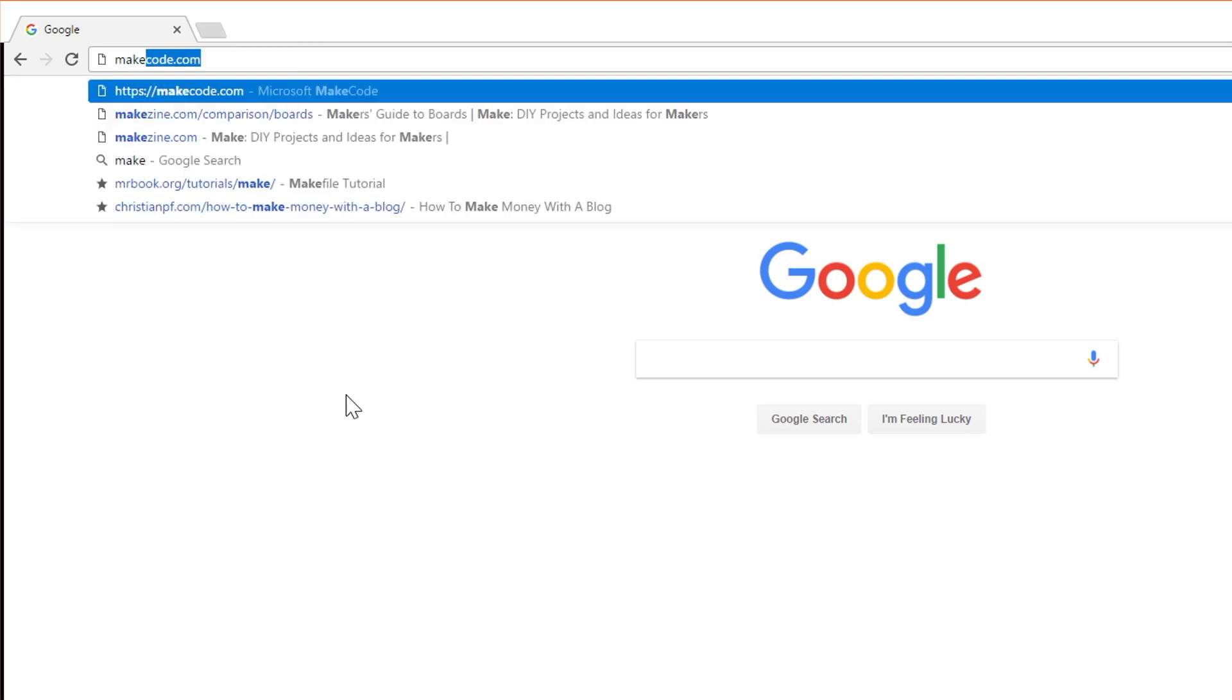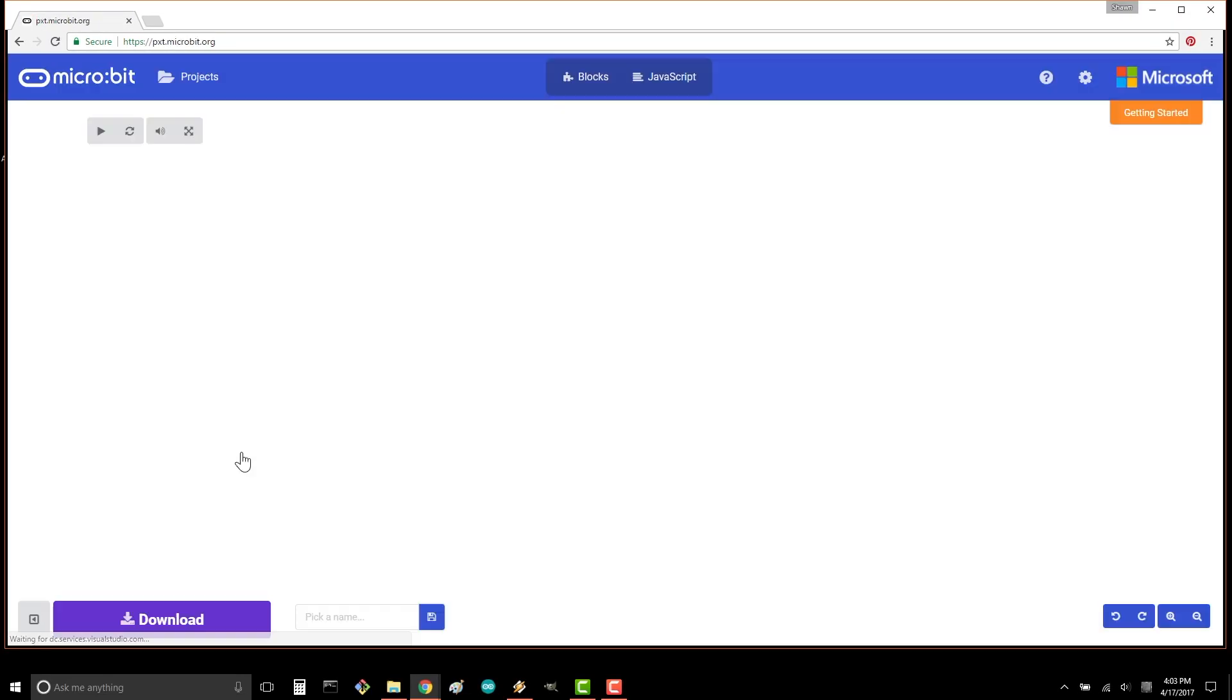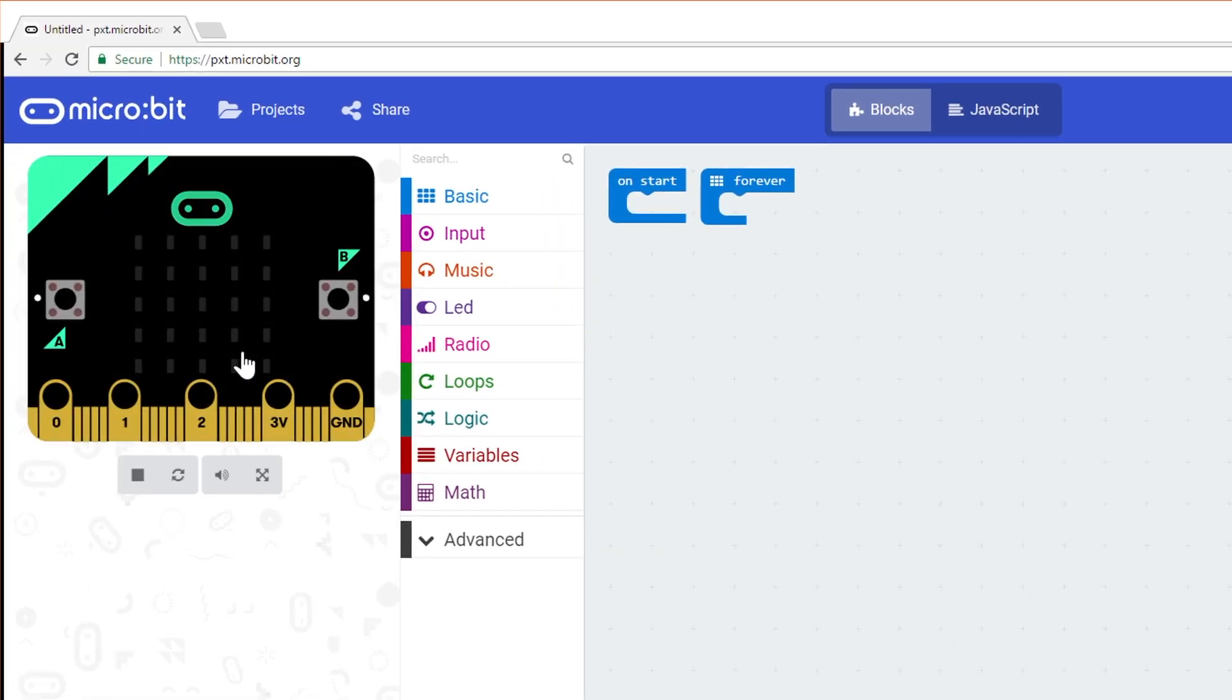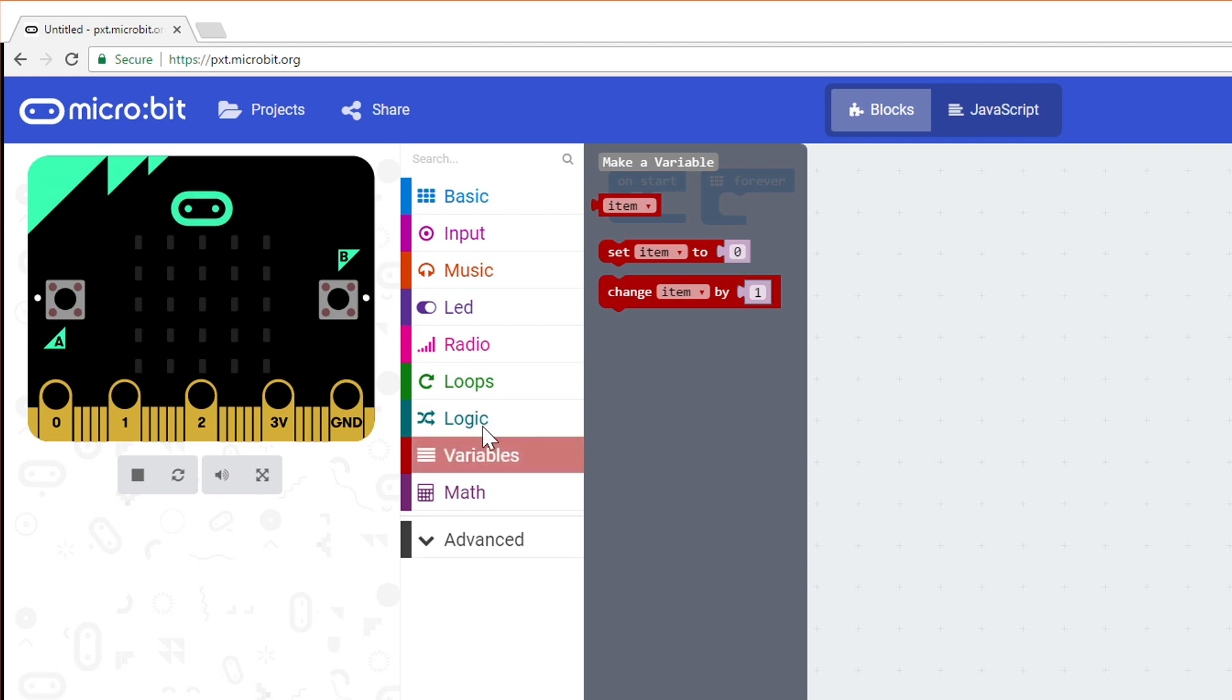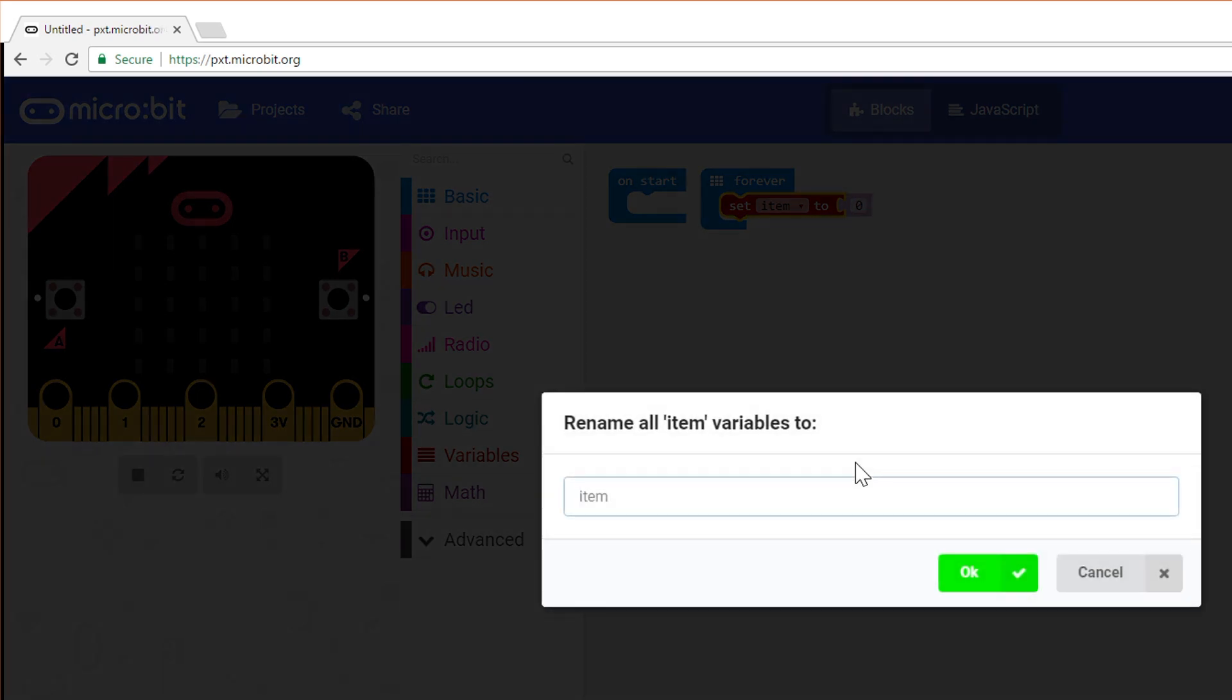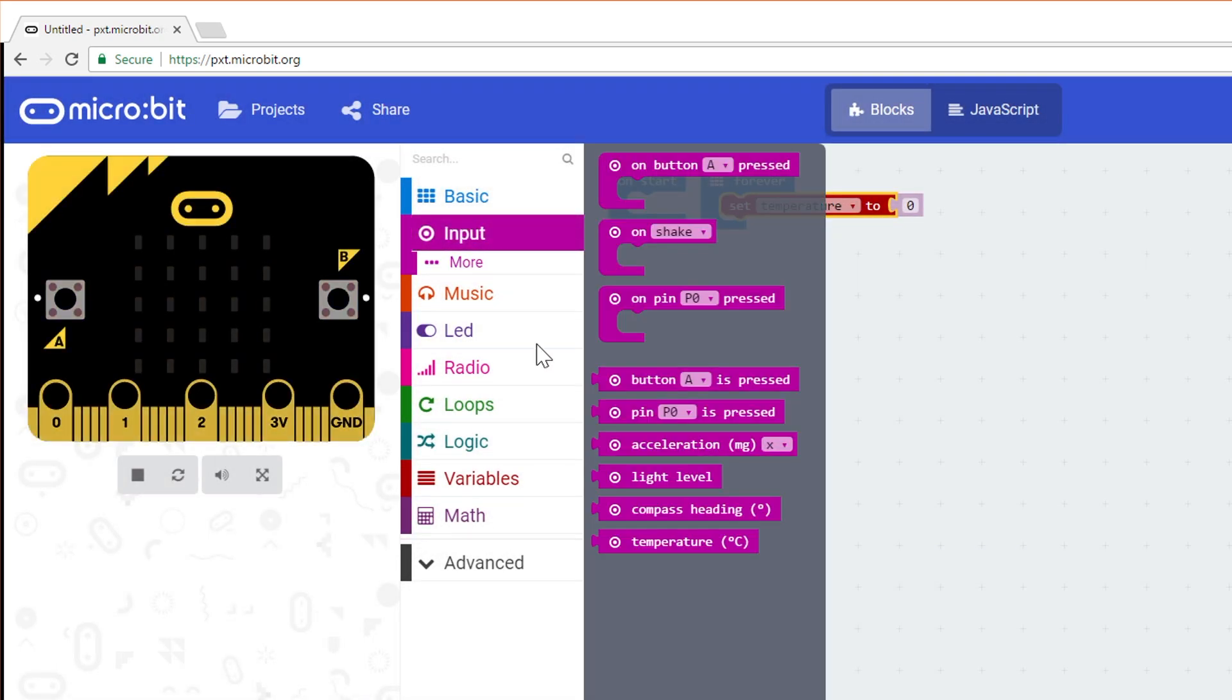Head to makecode.com and start a new micro bit project. We want to read the temperature and store it to a variable, so drag Set Item 2 from variables and attach it to the forever block. Click on Item and rename the variable to Temperature. Drag Temperature from Input and attach it to the right of the Set Variable block.